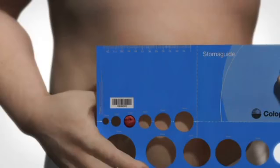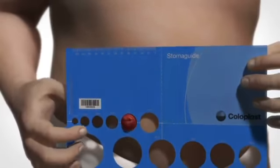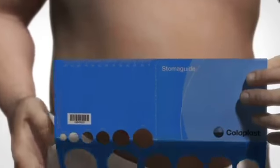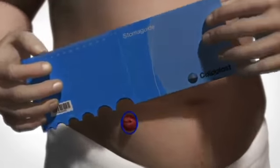If the hole is too narrow, the adhesive will not adhere properly. The hole must fit precisely to the size of your stoma. If your stoma is oval, measure the different diameters of the stoma using the half circles of the stoma guide.